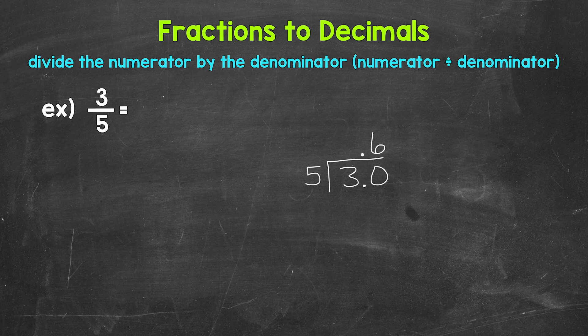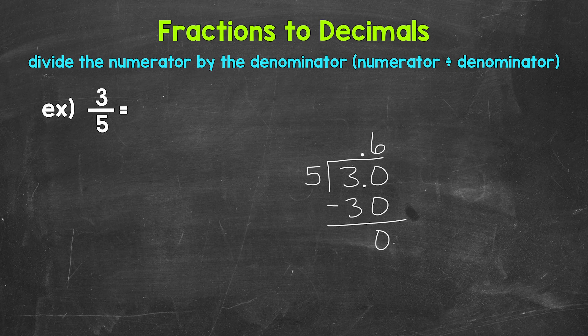Make sure that 6 is above the zero since we used that zero and thought of this as 30 divided by 5 — that's going to line us up correctly. Now we multiply: 6 times 5 is 30. Subtract: 30 minus 30 is zero. We have a clean zero at the bottom and nothing else to bring down, so we are done.